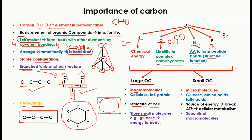Macromolecules also store small molecules. For example, when glucose is broken down, it provides energy to the body. On the other hand, small organic compounds are known as micromolecules — 'micro' meaning small. Glucose, amino acids, and fatty acids are examples of micromolecules. When they break down, they provide ATP — adenosine triphosphate — which is the energy currency of the body.